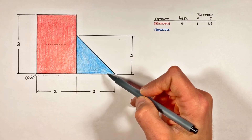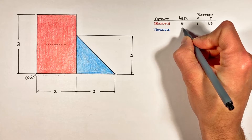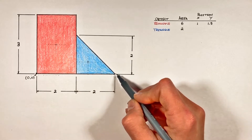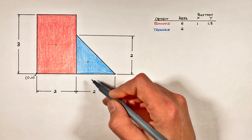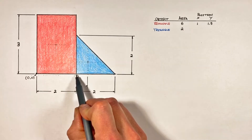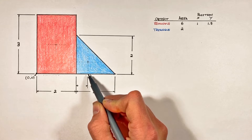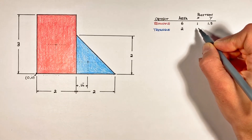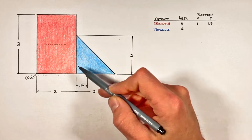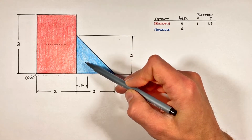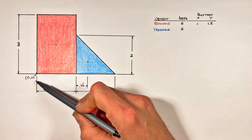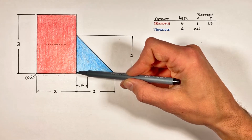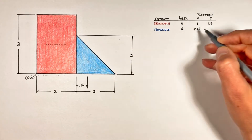The area of this triangle is simply one half base times height, giving an area of 2. For the position, the center of mass is one third of the base away from the left edge — that's one third times 2, so two thirds or 0.66. But we're measuring relative to our origin, so the horizontal position is 2 plus 0.66. Vertically, the center of mass is one third of the height — one third of 2 — which is again 0.66.